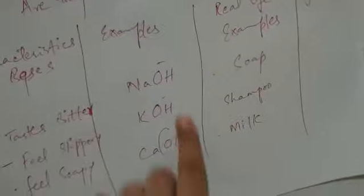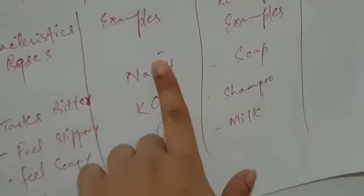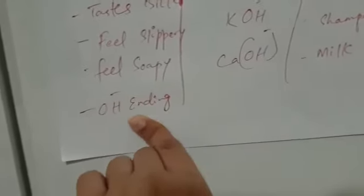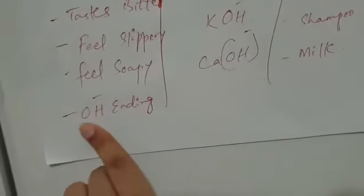Ca(OH)2: sodium hydroxide, potassium hydroxide, calcium hydroxide. If you see, there is one common thing - they all have OH at the end. Another property of bases is that they have OH ending, OH at the end. For acids, we said they have hydrogen at the beginning, while bases have OH at the end.